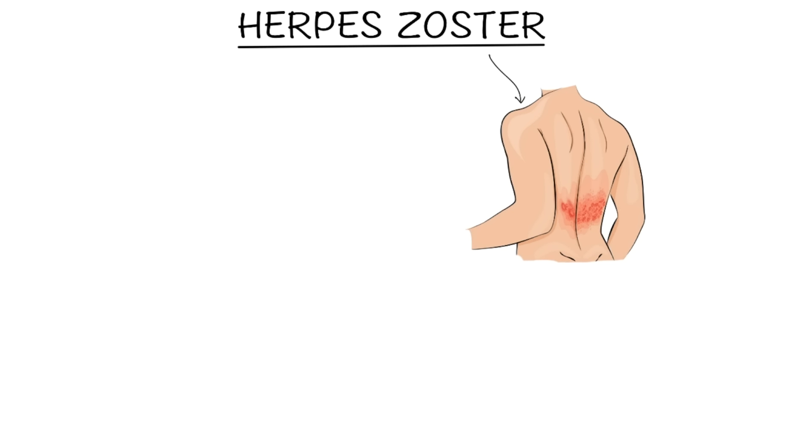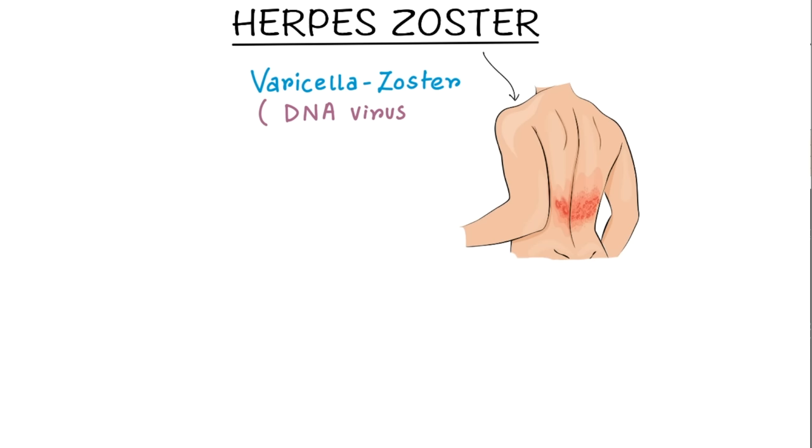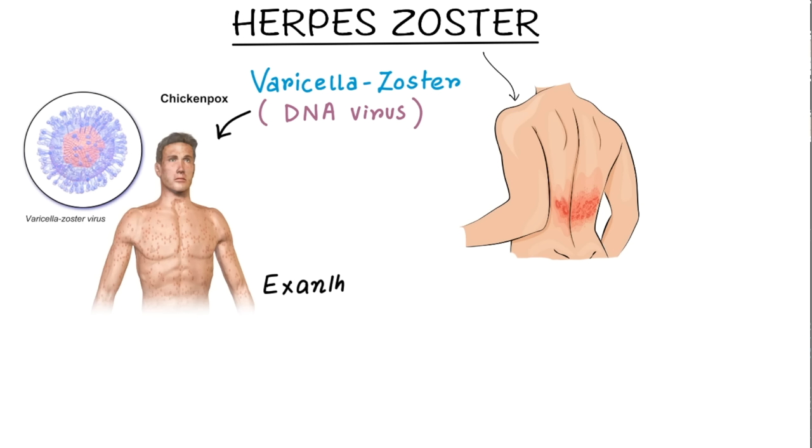Today we will discuss about Herpes Zoster infection. It is caused by varicella zoster virus, which is a DNA virus. Infection is first manifested as chicken pox, which is an exanthematous fever. That means fever is associated with skin rashes.